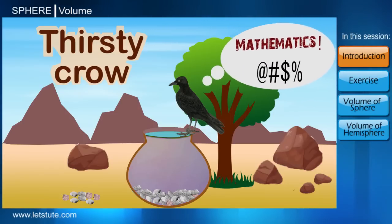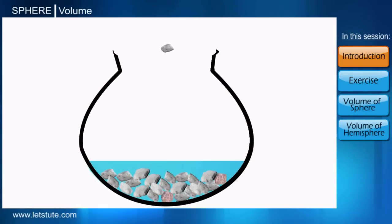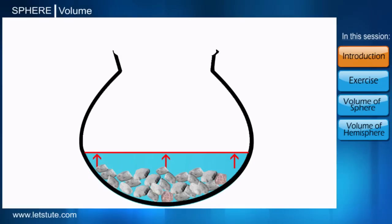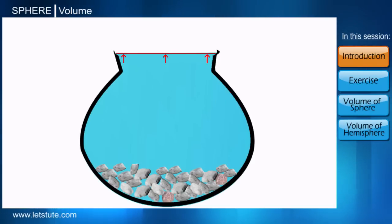Guys, knowingly or unknowingly that crow applied mathematics over there. The simple logic is when it was throwing small stones into the pot, the stones drowned and the same volume of water rose up. As soon as the number of stones increased, the water level also increased and it came up to the brim of the pot.